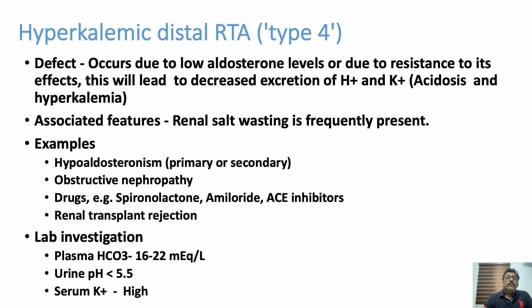Type 4 is hyperkalemic distal RTA — an important acidosis where potassium is high. In Types 1 and 2, we see hypokalemia with acidosis; in Type 4, we see hyperkalemia with acidosis. Many conditions can cause hyperkalemia with acidosis including renal failure, but if you see hypokalemia with acidosis, think Type 1 or Type 2 RTA.